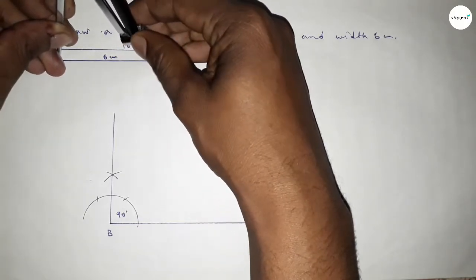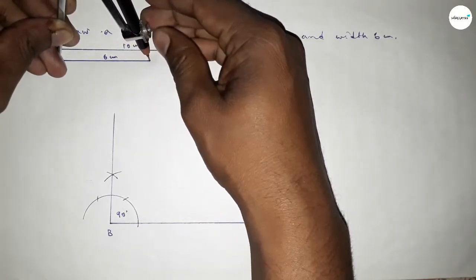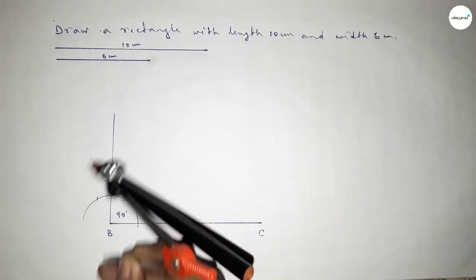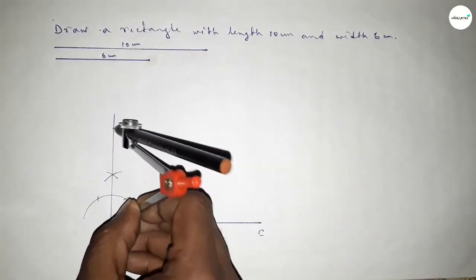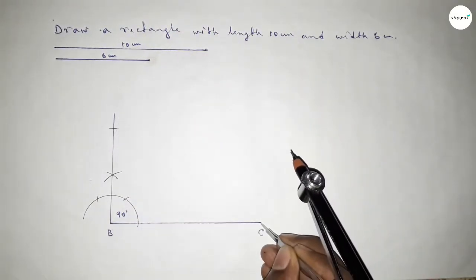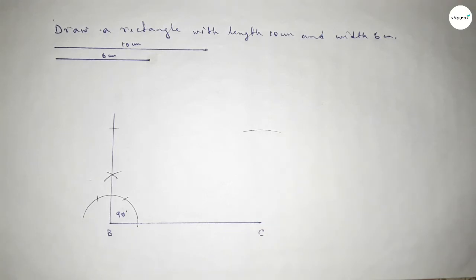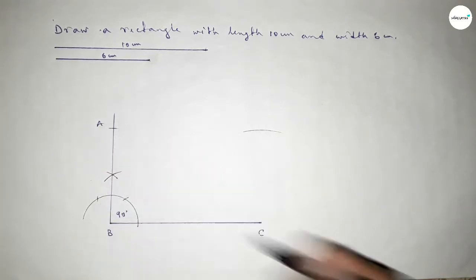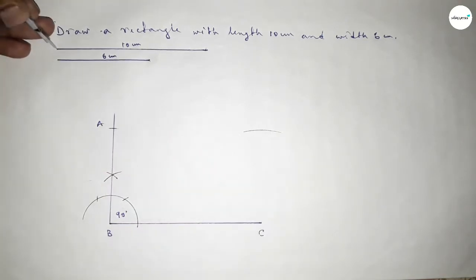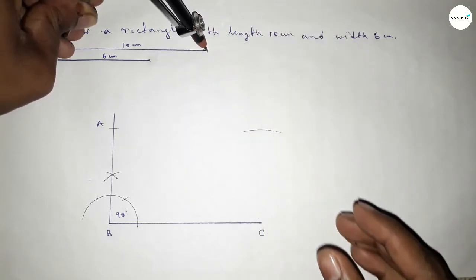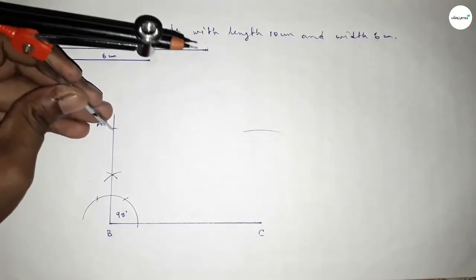Now taking the length 6 centimeter using the compass, putting the compass here and cutting here, then drawing an arc here. Taking here a point.